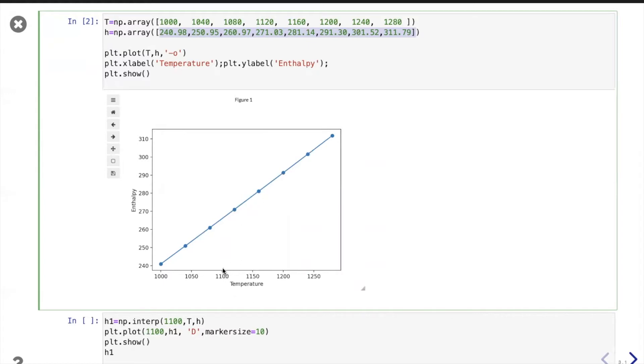We want to find out the value of the enthalpy at 1100 so it's going to be something over there. In Python in NumPy there is a function that is called interp in which the arguments are first the value that you want to interpolate and second is the x-axis, in this case the enthalpy, and I'm just plotting the dot that we found. So h1 is the value that we are looking for and is 266.